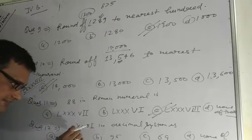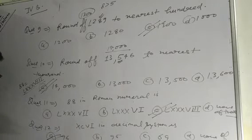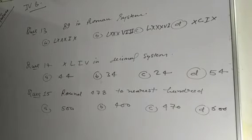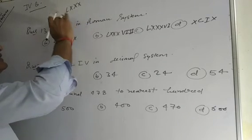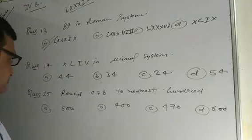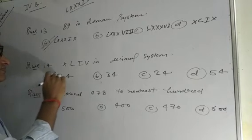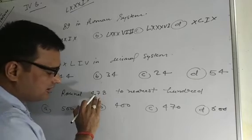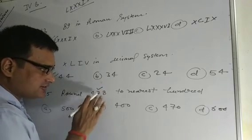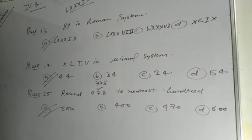Question number 12. Convert XXXVI to the decimal number system. XXXVI equals 36. Question number 13. Write 89 in the Roman numeral system. 89 is written as LXXXIX: 50 plus 30 plus 9 equals 89. Option A is the correct answer. Question number 14. Convert LXXLIV — the answer is 44. Question number 15. Round 478 to the nearest 100. We check the tens place digit, which is 7. Since 7 is greater than 5, we add 1 to 4 and get 500, with the units and tens places becoming 0. So option A is the correct answer. Thank you, students.